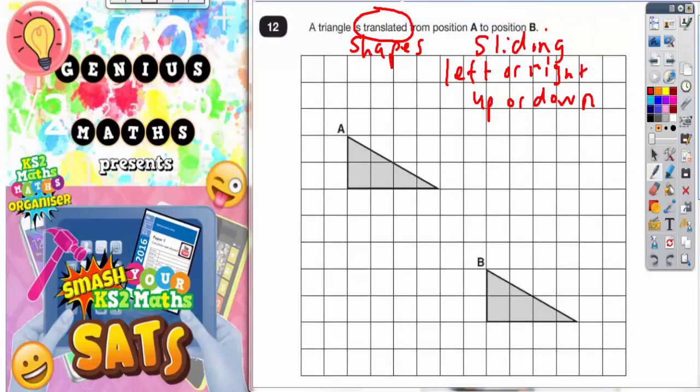Now the trick with this one is to pick a pair of corresponding corners on both shapes. By corresponding corners I mean corners in the same position on both shapes. So if you're going to choose the top corner on triangle A, you need to also choose the top corner on triangle B.